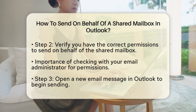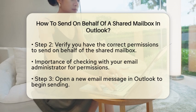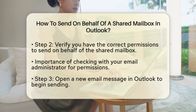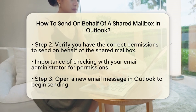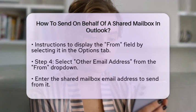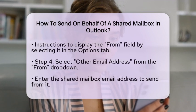Now that you have the shared mailbox set up and the necessary permissions, you can send an email on behalf of the shared mailbox. Start by opening a new email message in Outlook. If you do not see the From field in your email, go to the Options tab and select From to add it to your message. This step is important because you need to specify the sender.